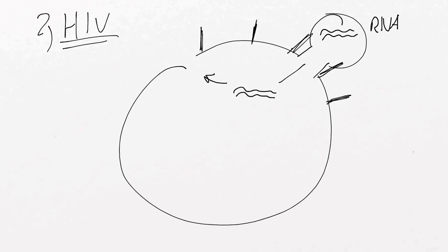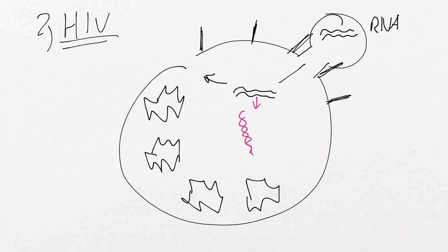In the cell, again, it hijacks the protein generation mechanism, makes new proteins, makes new virus proteins. And then it does something really nasty. It converts this double-stranded RNA into double-stranded DNA. Again with a special protein which is called reverse transcriptase.